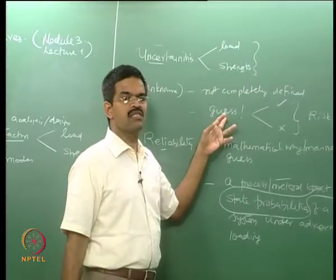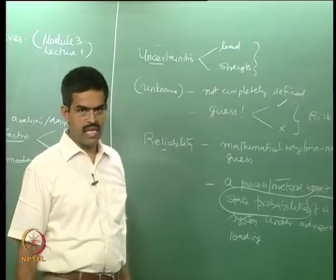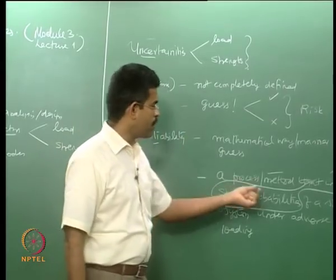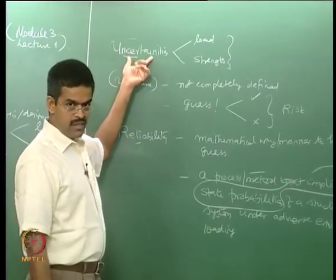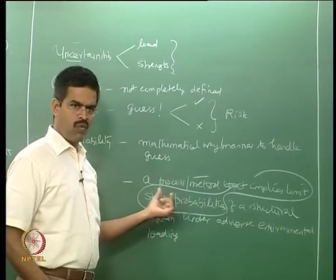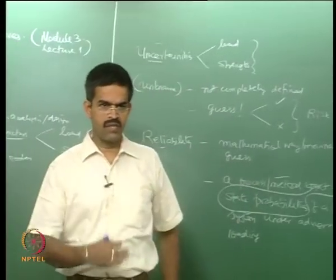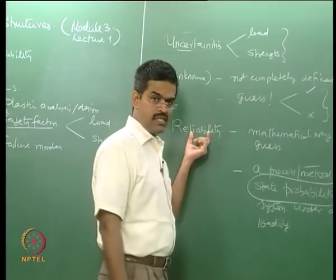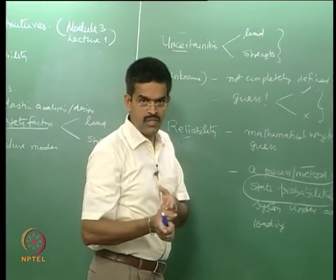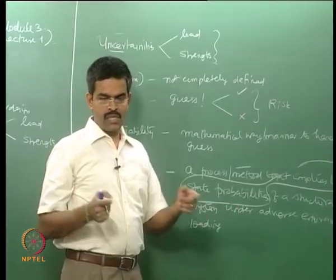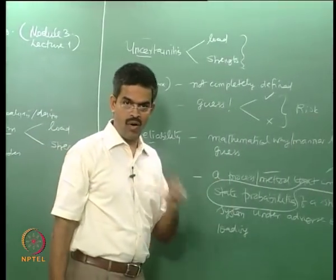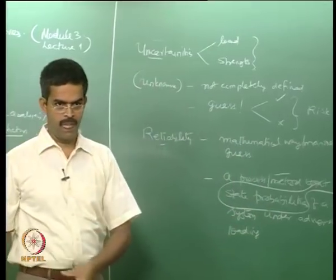The uncertainties are not handled at random as the wish of the designer. There are some methods, some techniques of handling them using probability theory. The moment I convert uncertainties mathematically through the tools of probability, I get a limit state — whether ultimate limit state, limit state of serviceability, or whatever I wish. It means reliability is a technique which bridges the uncertainty between researchers on loads and strength to the designer, connecting analysis and design.